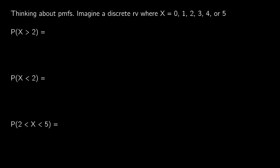Let's look at some variations we can be asked when it comes to PMFs. Imagine we have a random variable where X can be 0 through 5 — any of those integers — and we're asked to find the probability that X is greater than 2. What we're really saying is that we want the probability that X equals 3, or X equals 4, or X equals 5. In other words, we add those three values together.